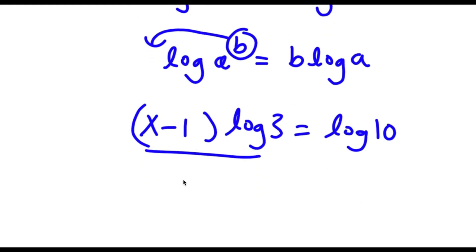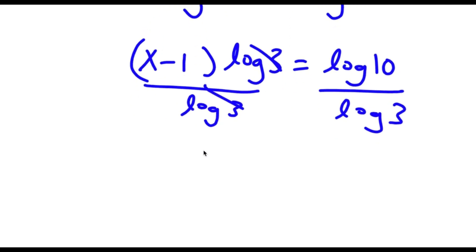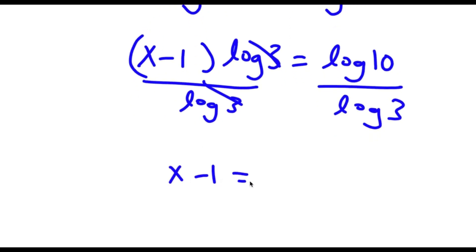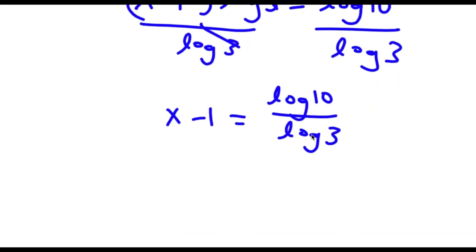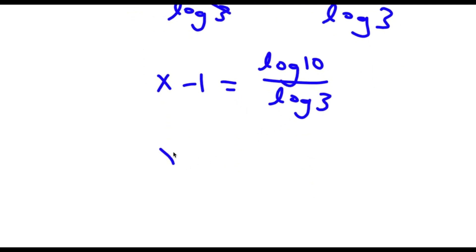Now I'm left with x minus 1 is equal to log 10 over log 3. Now log 10 is actually equal to 1. So now I have x minus 1 is equal to 1 over log 3.